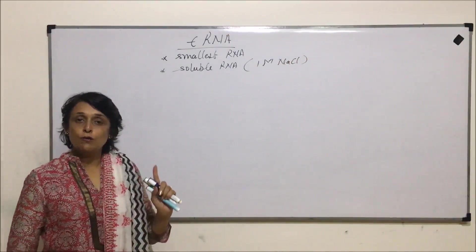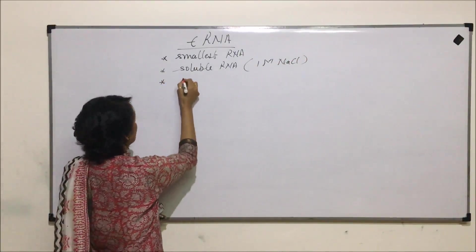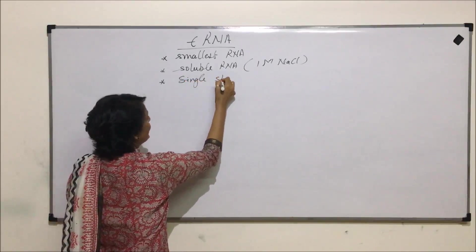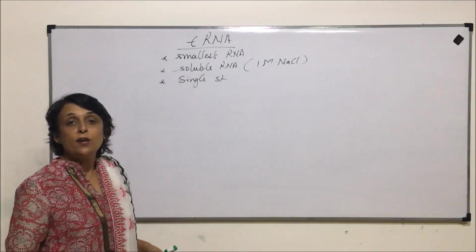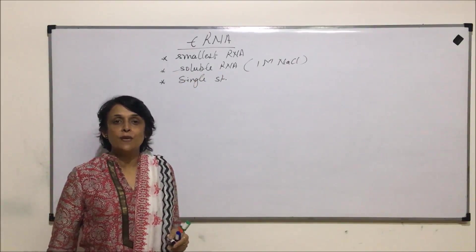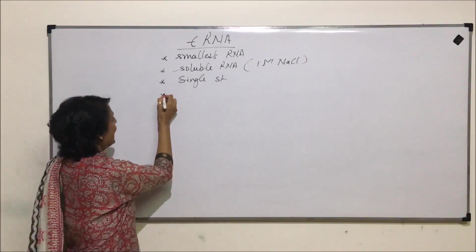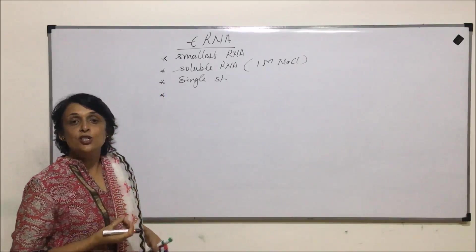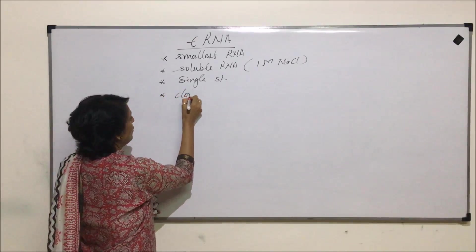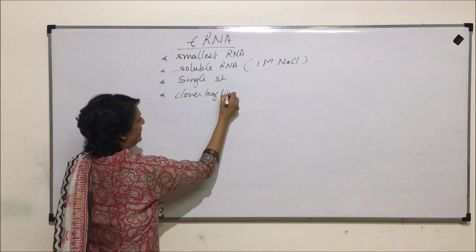tRNA is single stranded. All RNAs are single stranded, but because of formation of bonds between the nitrogen bases of the same strand, it has gained a shape which is clover leaf-like.